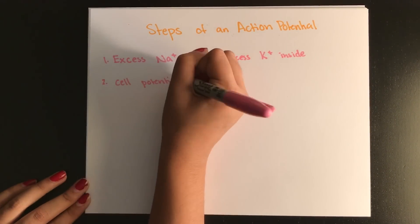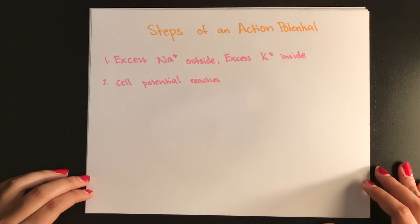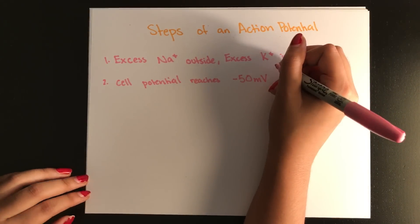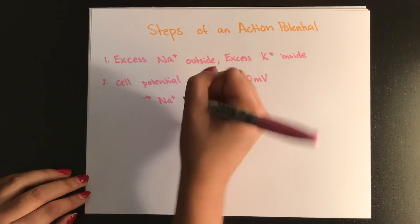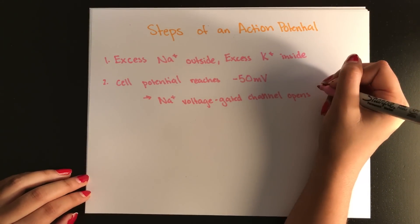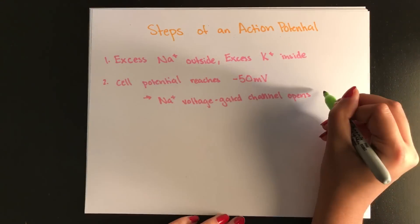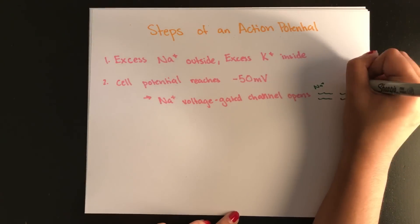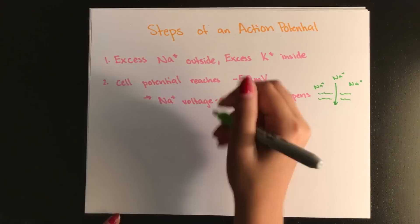Now when the cell potential reaches negative 50 millivolts, the sodium-voltage-gated channel opens and sodium rushes into the cell. Now this is called depolarization because we're actually passively diffusing sodium in. This isn't any active transport. And this is getting it back to equilibrium.